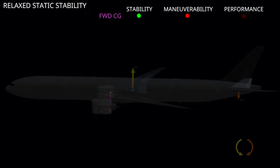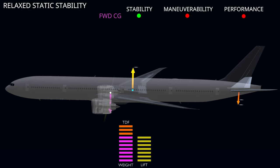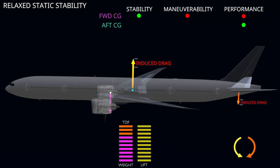The forward CG position also reduces cruise performance. The forward CG location increases the nose-down pitching moment, so the tail has to compensate with more downforce. The downforce from the tail increases the effective weight of the aircraft. The lift has to be equal to the weight and the tail-down force for level flight. Lift is increased by increasing the angle of attack of the wings. Since lift on the wings and the tail is an aerodynamic force, increasing lift also increases induced drag. To overcome this drag, the aircraft has to burn more fuel.